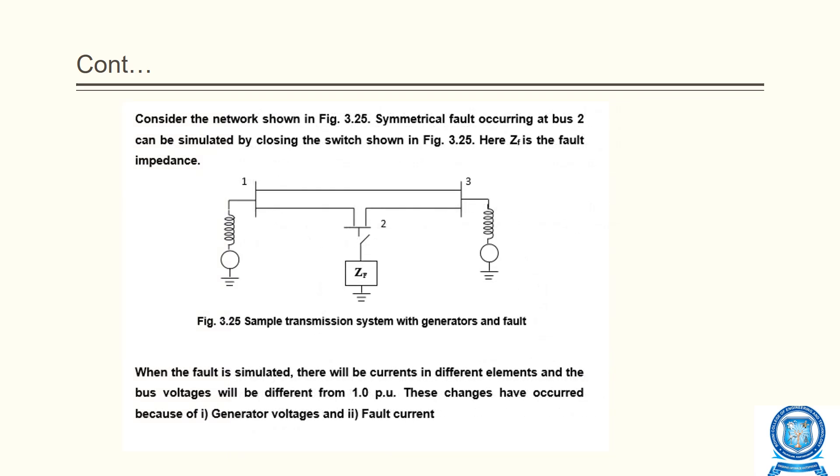Consider the network shown in the figure with a symmetrical fault occurring at bus 2. The fault is denoted by impedance ZF and can be simulated by closing the switch shown. When the fault is simulated, there will be current in different elements and bus voltages will differ from 1.0 per unit. These changes occur because of generator voltage and fault current.